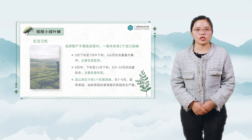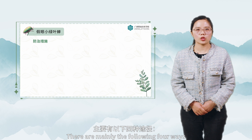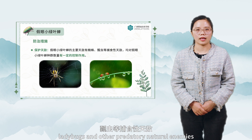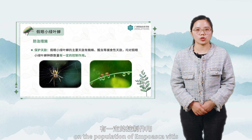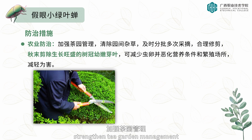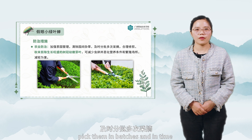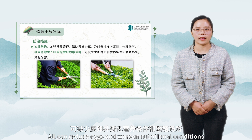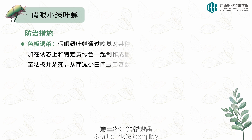How to prevent and control Empoasca vitis? There are mainly four methods. First, protect natural enemies: the main natural enemies are spiders, ladybugs, and other predatory insects, all of which have a certain control effect on the population. Second, agricultural prevention and control: strengthen tea garden management, remove weeds, pick tea in batches and on time, prune reasonably, and cut off young buds of the crown at the end of autumn — all of which reduce eggs and worsen conditions for the pest.